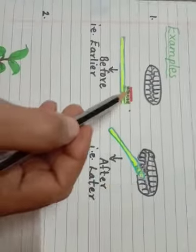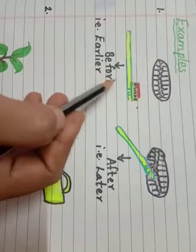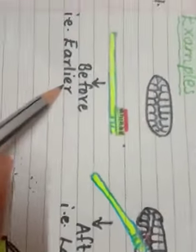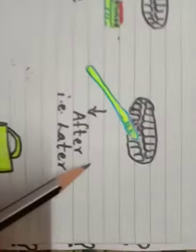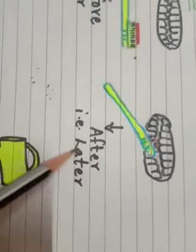Your teeth. I have drawn the pictures here. Teeth, toothbrush. First, before brushing, what you do? You apply the paste on the toothbrush. That is earlier. Then, after what you do? You are brushing the teeth with the toothbrush. That is later.